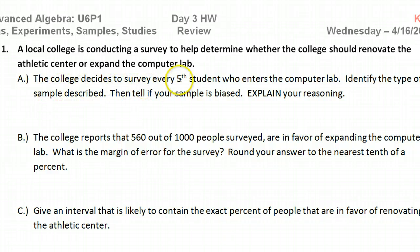The college decides to survey every fifth student who enters the computer lab. Identify the type of sample described, then tell if your sample is biased and explain the reasoning. First of all, we've learned that any time they say something about every fifth student, every tenth student, anything like that, that is the method called systematic. That was a systematic sample.